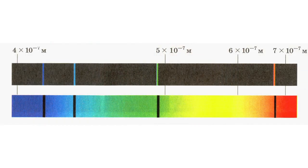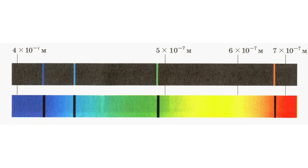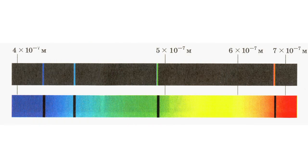Dispersion occurs as light rays with different wavelengths propagate in transparent substances, i.e. optical environments, at different speeds. Generally, the smaller the wavelength is, the greater the refraction factor and the smaller the light speed will be. In solid and fluid bodies, you see a continuous spectrum, while in gases, you see a discrete spectrum, typical of such substances only.